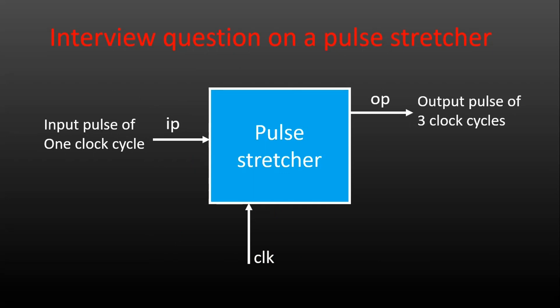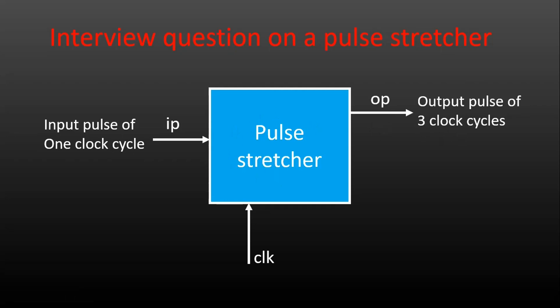The very first question is on your screen, where you have to design a pulse stretcher. What do I mean by pulse stretcher? It has one input IP and one output OP — both input and output are one bit. Apart from input and output, it has one clock signal. In this particular example, the input is a one clock cycle pulse and the requirement is the output should be three clock cycles of pulse. That means this pulse stretcher is stretching a pulse up to three clock cycles.